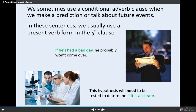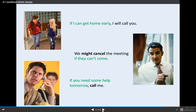We sometimes use a conditional adverb clause when we make a prediction or talk about future events. This is the kind of sentence we call the type one conditional. In these sentences, we usually use a present verb form in the if clause. Examples: 'If he's had a bad day, he probably won't come over.' 'If I can get home early, I will call you.' 'We might cancel the meeting if they can't come.' 'If you need some help tomorrow, call me.' Notice that when the if clause comes first, you use a comma; when it comes second, there's no comma.